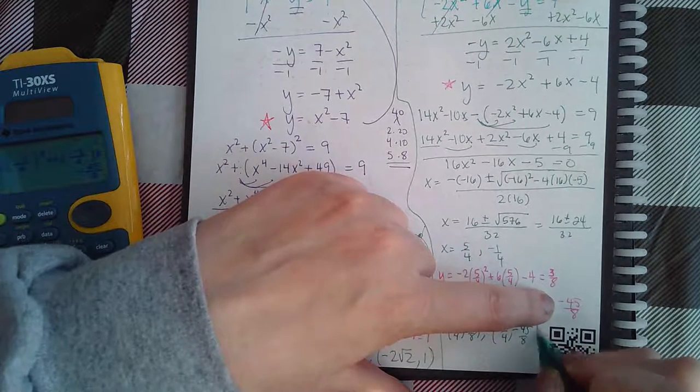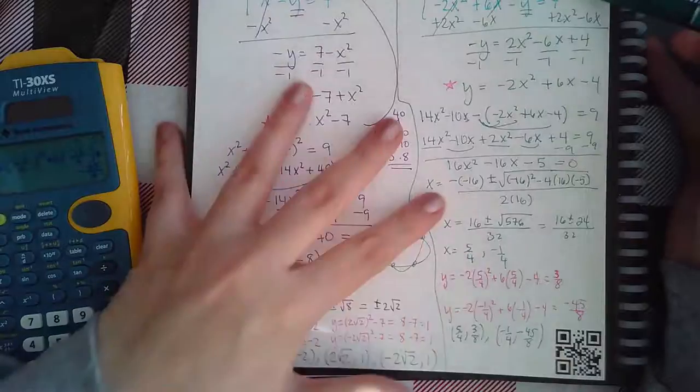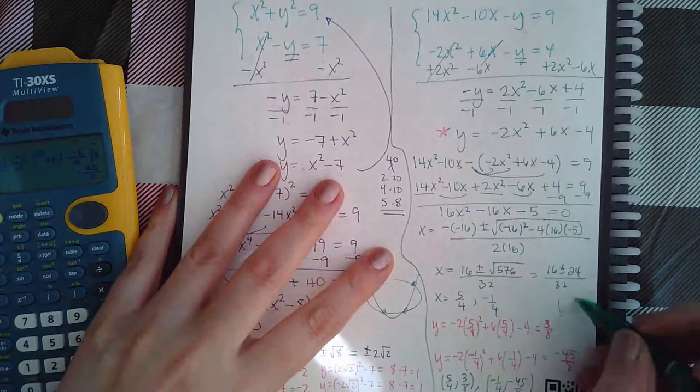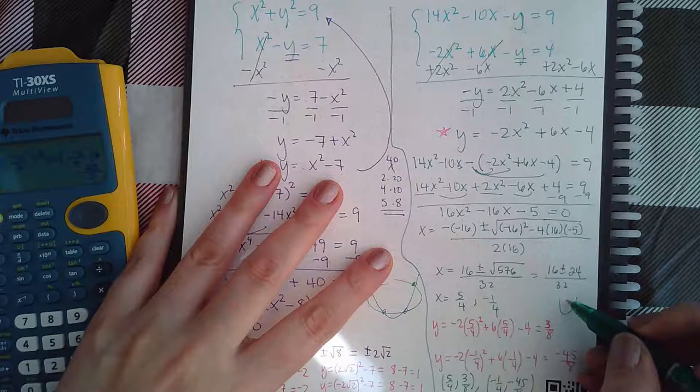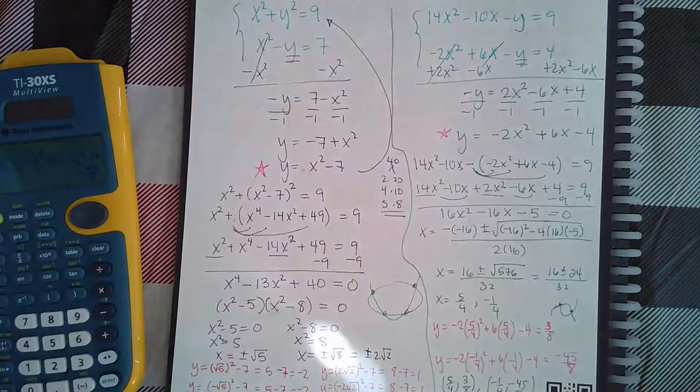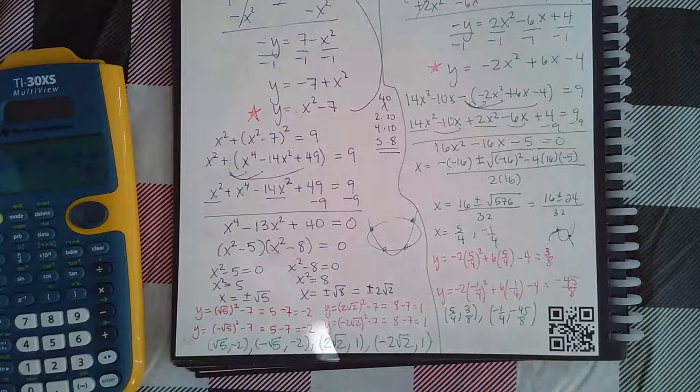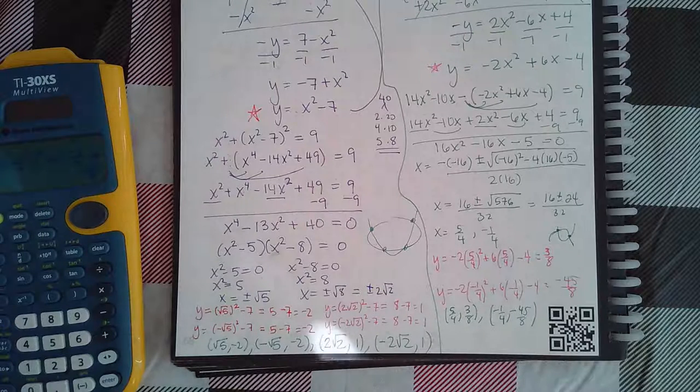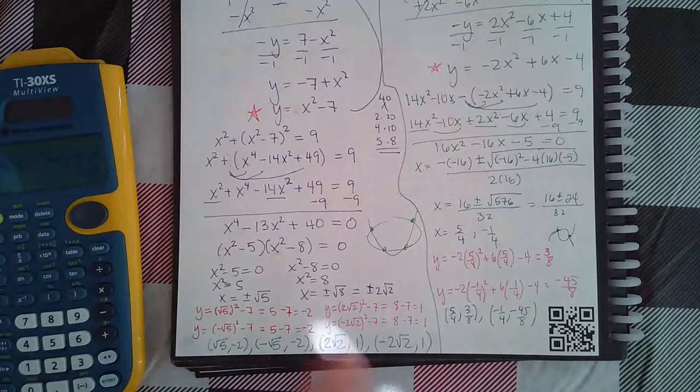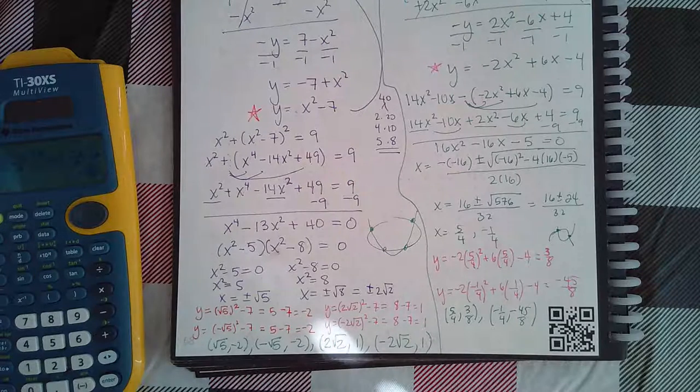There are my two solutions. For this x value 5 fourths I got the y value 3 eighths, and for this x value negative 1 fourth I got the y value negative 45 over 8. In this problem I ended up getting two solutions. What's happening here is these are two parabolas. When I have two parabolas, if you've got one parabola like this and then possibly another one going downward like that, you're going to cross in two different places. That's why I ended up with two different solutions.